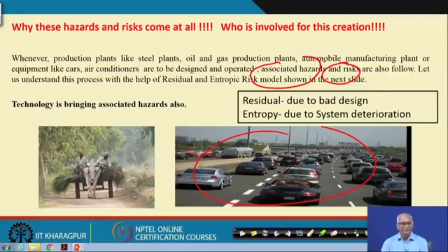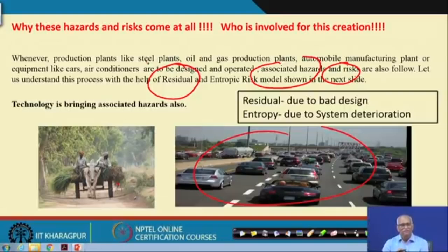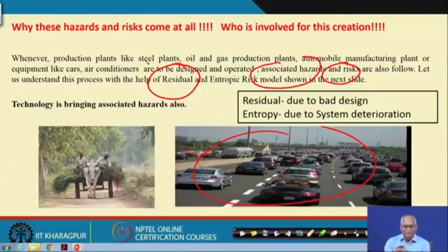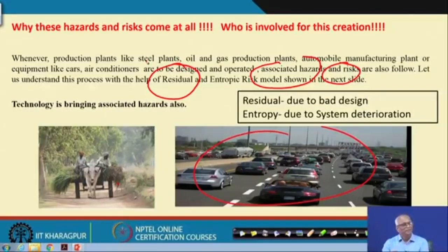There are two types of risks. One is residual risk. What is residual risk? While designing equipment, unknowingly — 90 percent of the time — people are not able to see the hazard and the risk, and they leave some hazard. That is the residual hazard, which will be converted into risk when the equipment is put in service. If any deterioration happens, then the entropic risk will come.